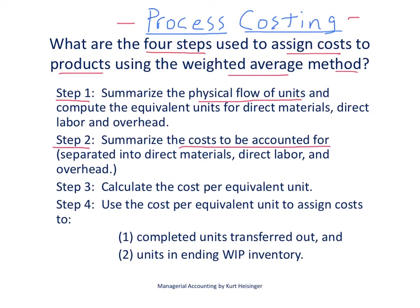We're really just trying to get information together to run some calculations at the end with step four. Step three is to calculate the cost per equivalent unit, and step four is to use the cost per equivalent unit to assign costs to those units that were transferred out of work in process over into finished goods, and also to make sure we have the right costs for the units that are still in ending work in process inventory.